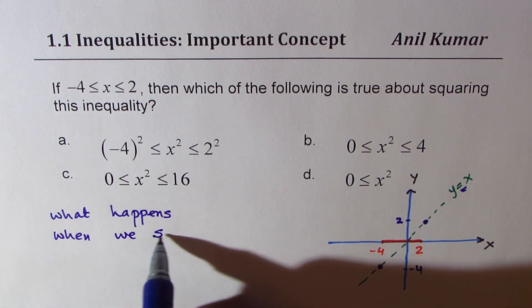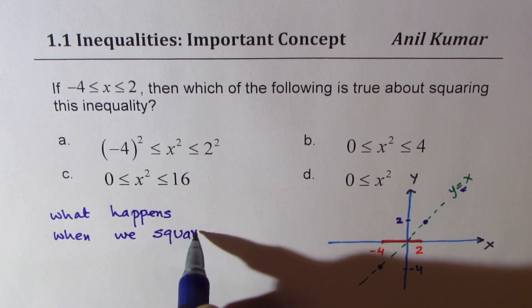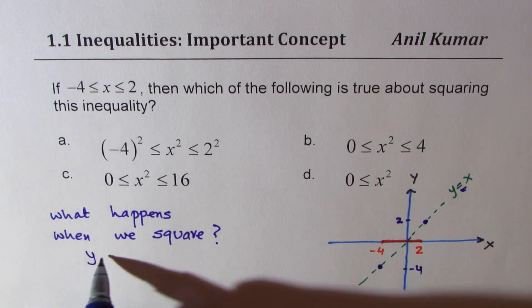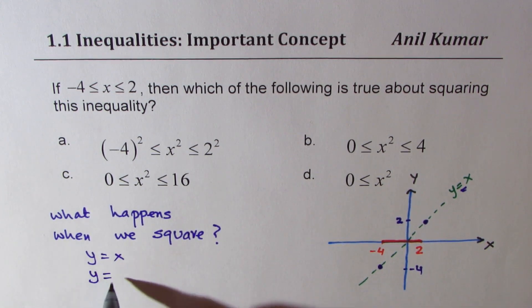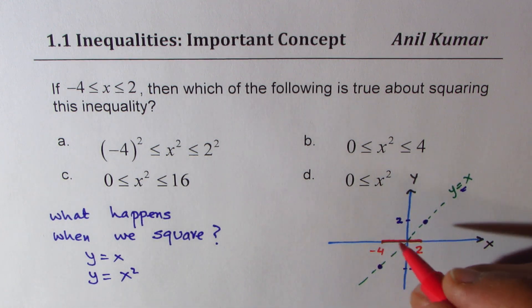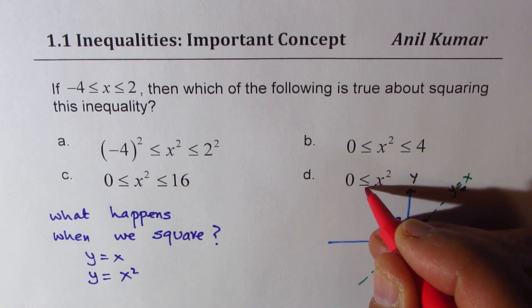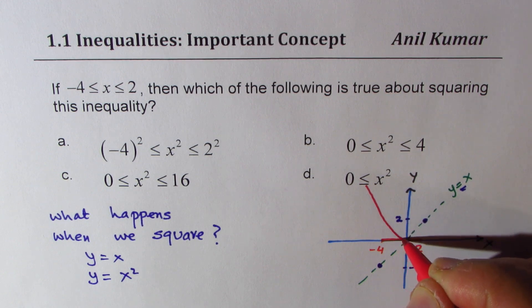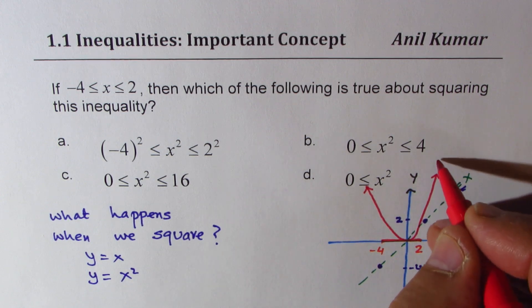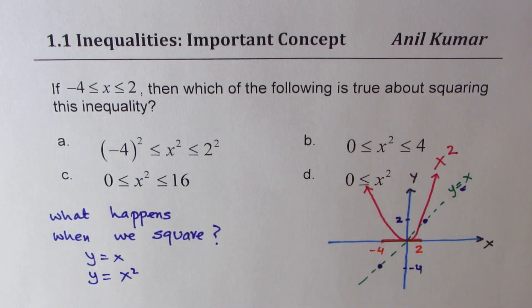Now the question is what happens when we square? We were talking about Y equals X, but now it becomes Y equals X squared — the function changes. So we are now trying to look for those two results on a different equation altogether. We are now talking about X squared, so the graph becomes a parabola — something like this. I'm just sketching one graph here to give you an idea.